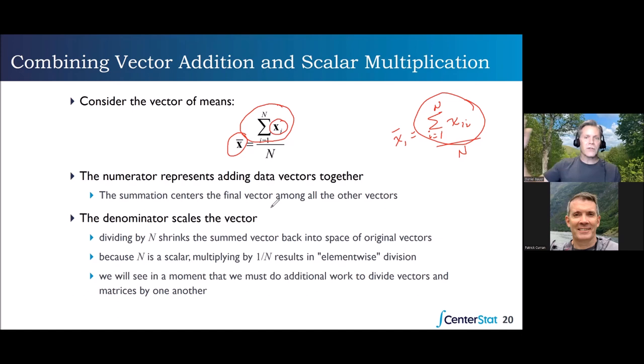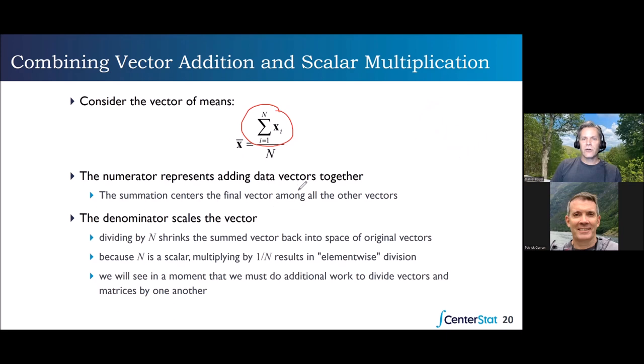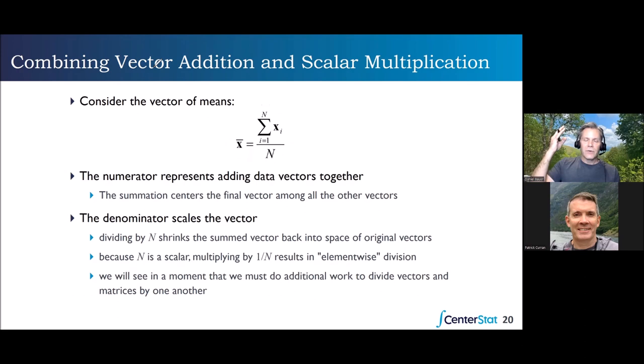Each individual has their own column vector of values on the set of variables. Here's the column vector for person one, person two, person three, and so on. We add up those vectors across our N individuals — vector addition — and then multiply by one over N. You can think of that multiplication by one over N as shrinking that summed vector back into the space of the original vectors.